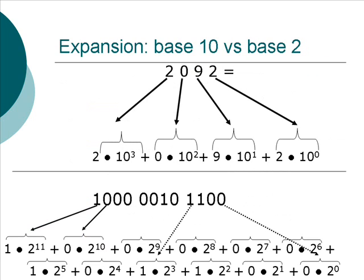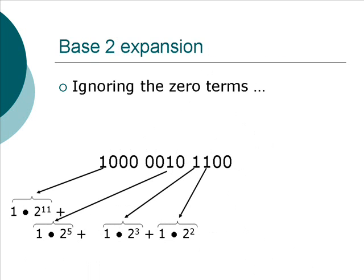Notice that the expansion of a base 2 number is just like the expansion of a base 10 number, except that the weights are powers of 2 instead of powers of 10. In this diagram, I haven't shown all of the arrows in the base 2 example, because the diagram would get quite cluttered. I'm going to ignore the 0 terms, because 0 times anything, including any power of 2, is always going to be 0.